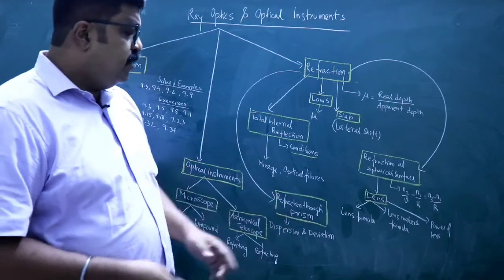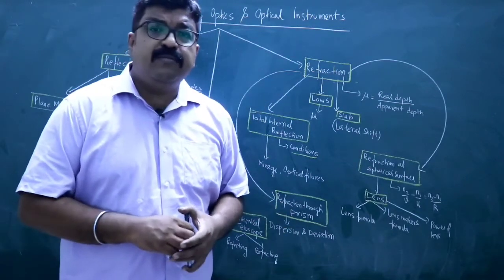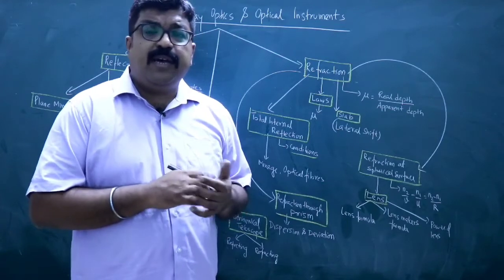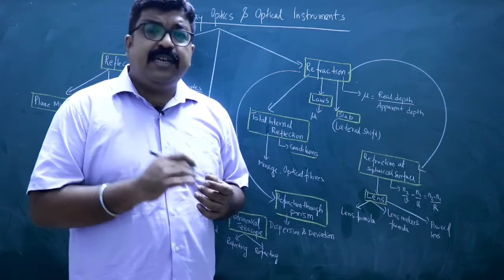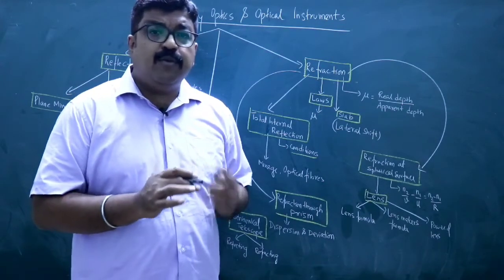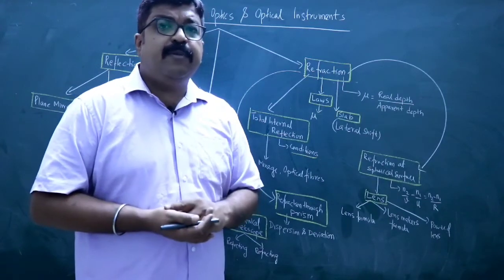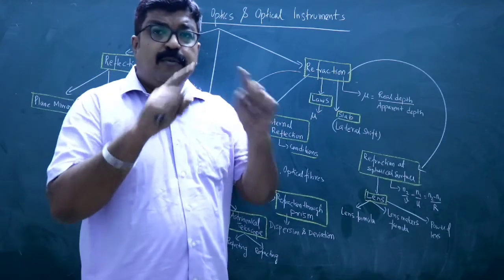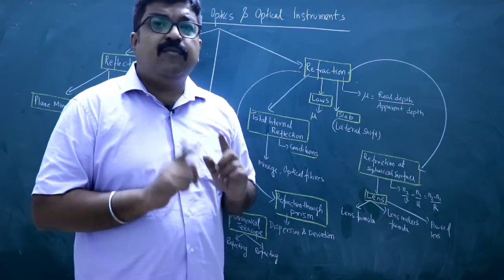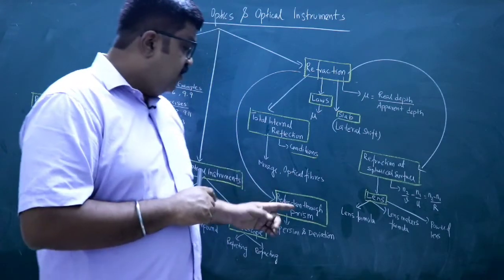Then, we come to Refraction Through Prism. The formula is the refractive index Mu is equal to sin of A plus delta m by 2 divided by sin A by 2, which you may have learned in practical. In practical experiments, we use that formula. The derivation of the formula with the Ray Diagram - you must practice this.